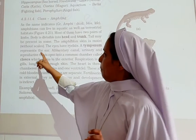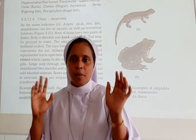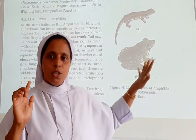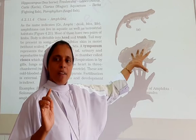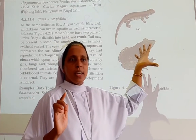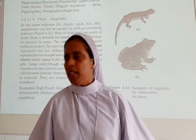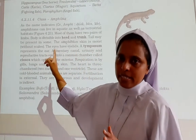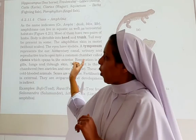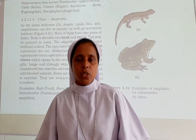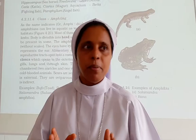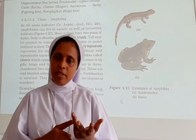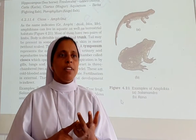The eyes have eyelids. Tympanum represents the ear — only mammals have an external pinna, so amphibians do not have ear pinna; instead they have a tympanum representing the ear. The alimentary canal, urinary tract, and reproductive tract all open into a common chamber called the cloaca, which opens to the exterior.